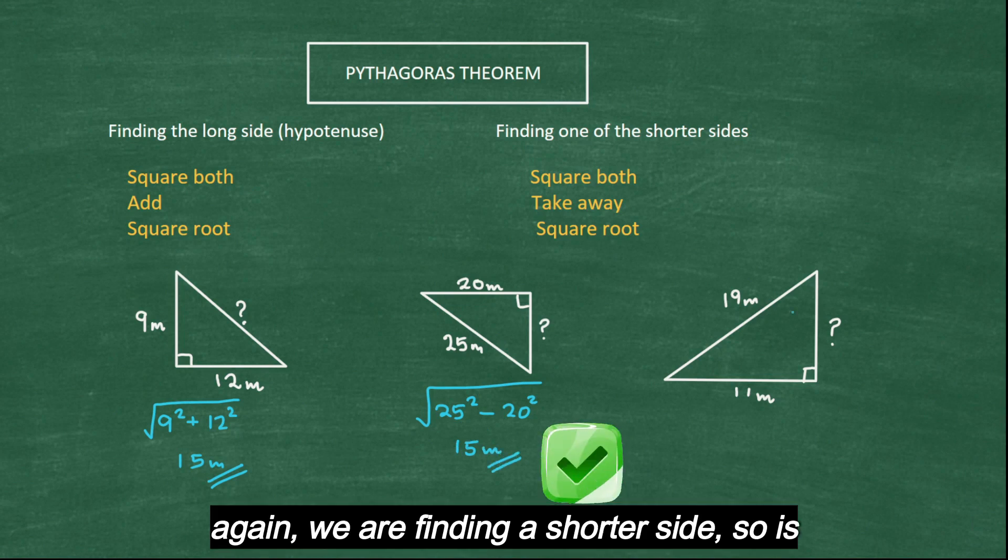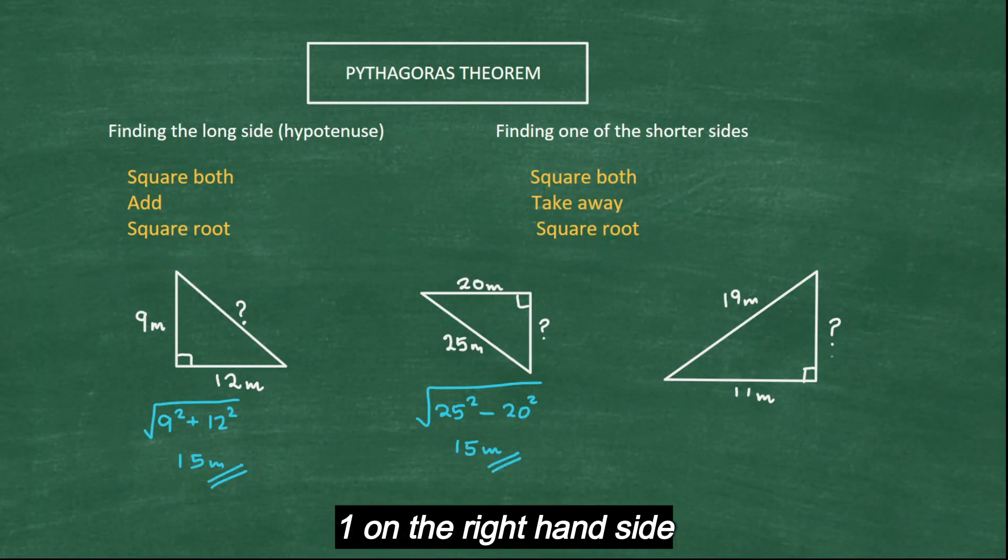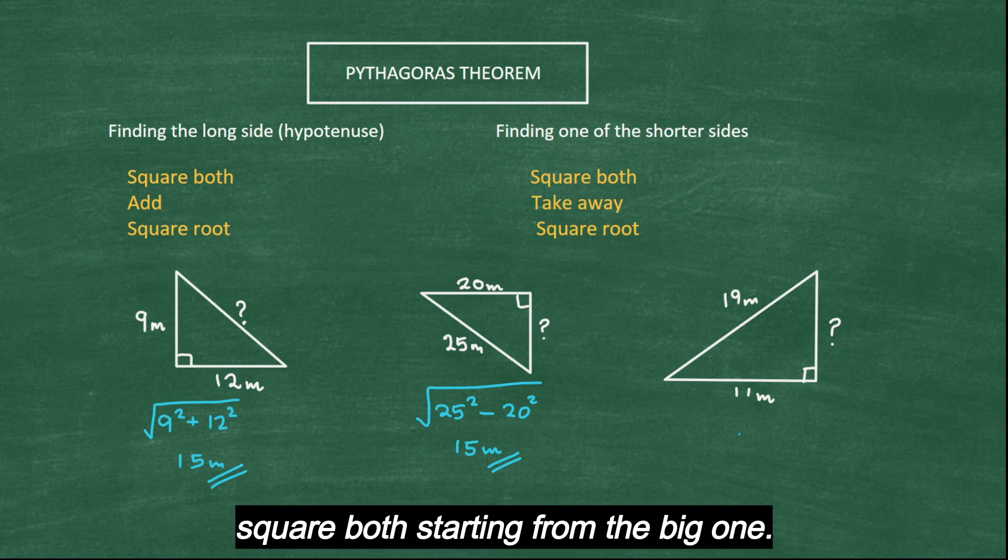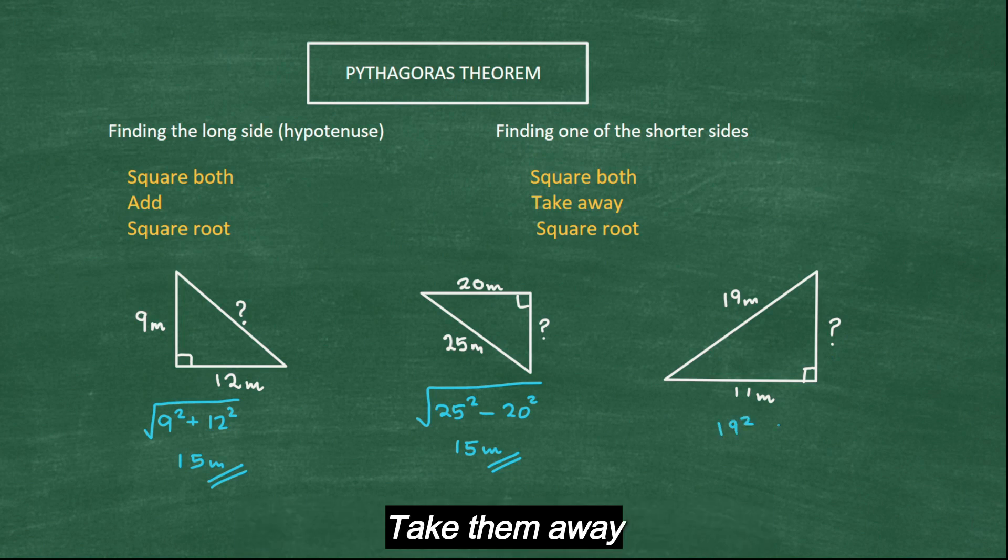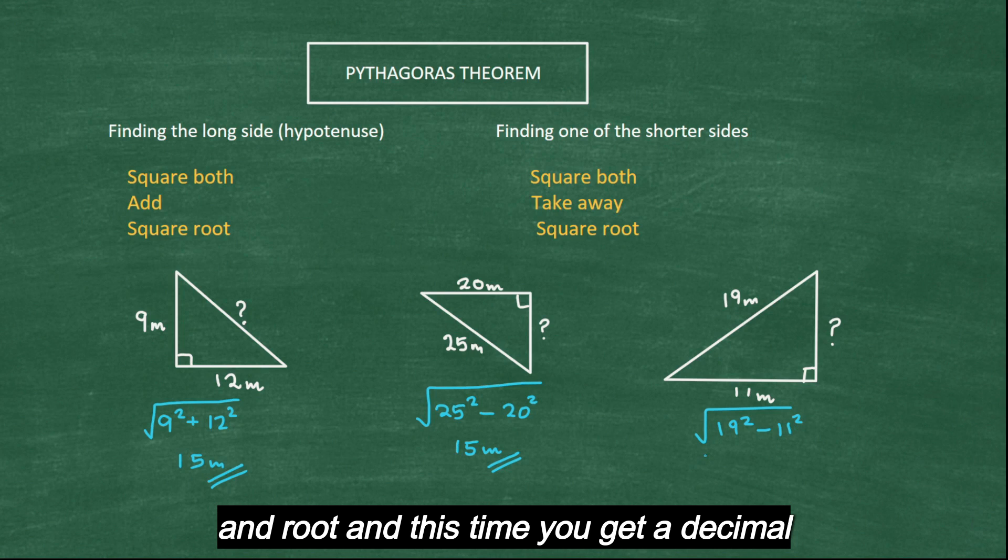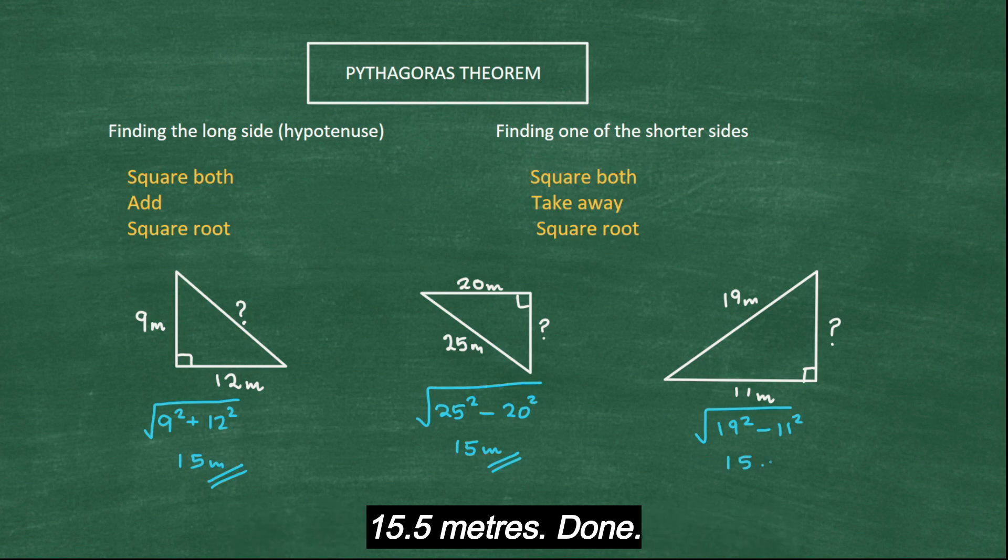Last question. Again, we are finding a shorter side. So it's one on the right hand side. Square both starting from the big one. Take them away and root it. And this time you get a decimal 15.5 meters. Done.